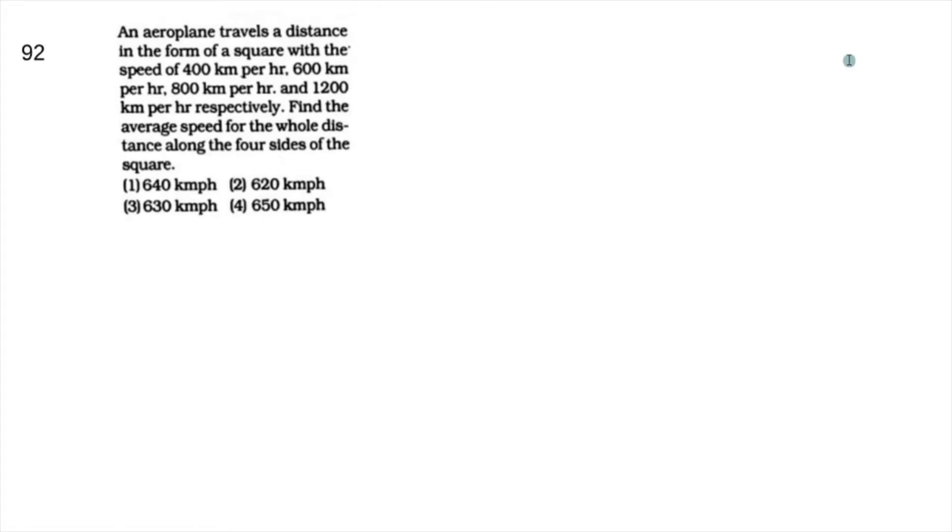In this question, it is saying that an airplane travels a distance in the form of a square with the speed of 400 km per hour, 600 km per hour, 800 km per hour, and 1200 km per hour respectively.